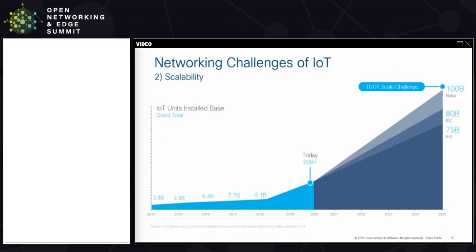The second biggest challenge is scalability. The internet has been growing for a long time. Looking back about five years, the amount of devices has been increasing, but we are now at a breaking point where with the increase of IoT devices the number will grow exponentially. Predictions from Nokia, IDC, and IHS show the amount becomes massive, so it is important to have a scalable way to manage these devices.